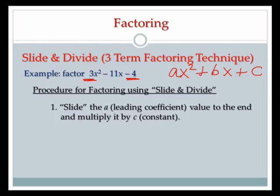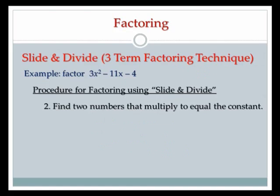I'm going to slide a and multiply it by c. So 3 times 4 is 12, giving me x squared minus 11x minus 12. That's step one. Step two: find two numbers that multiply to equal the constant, which is 12.